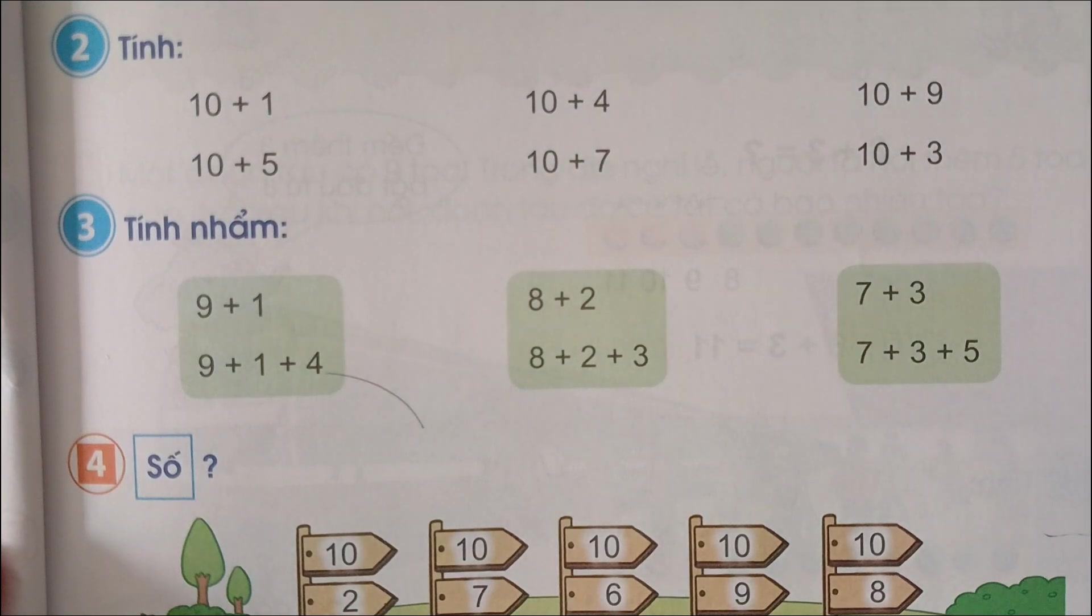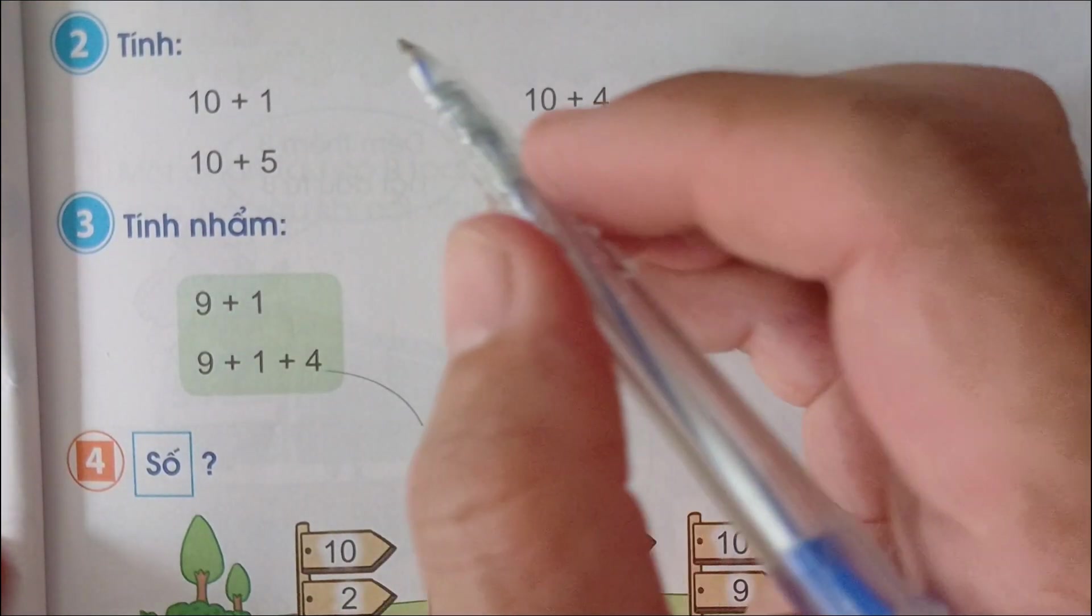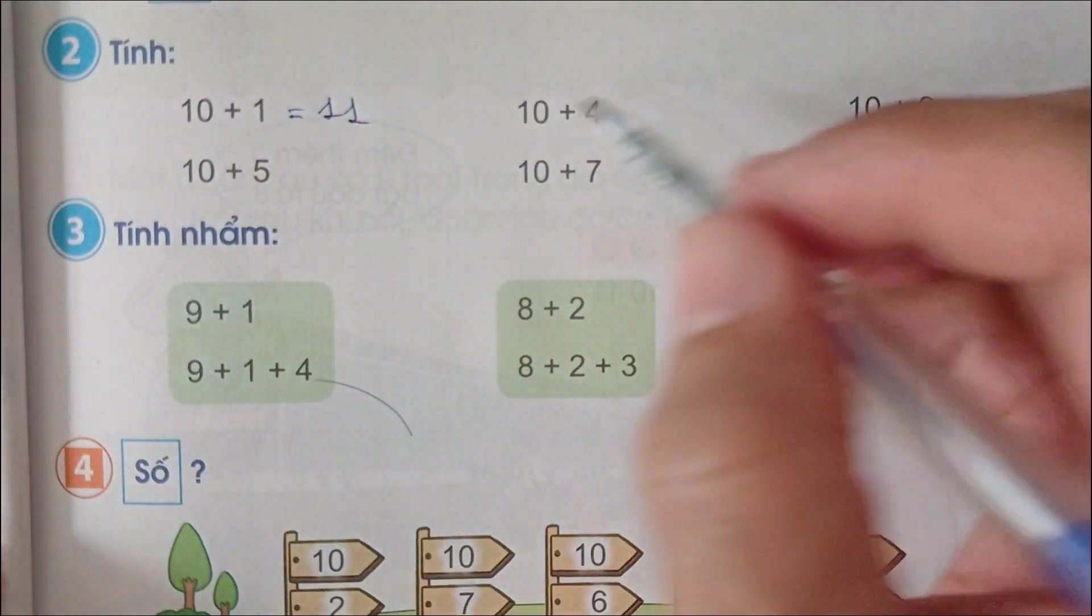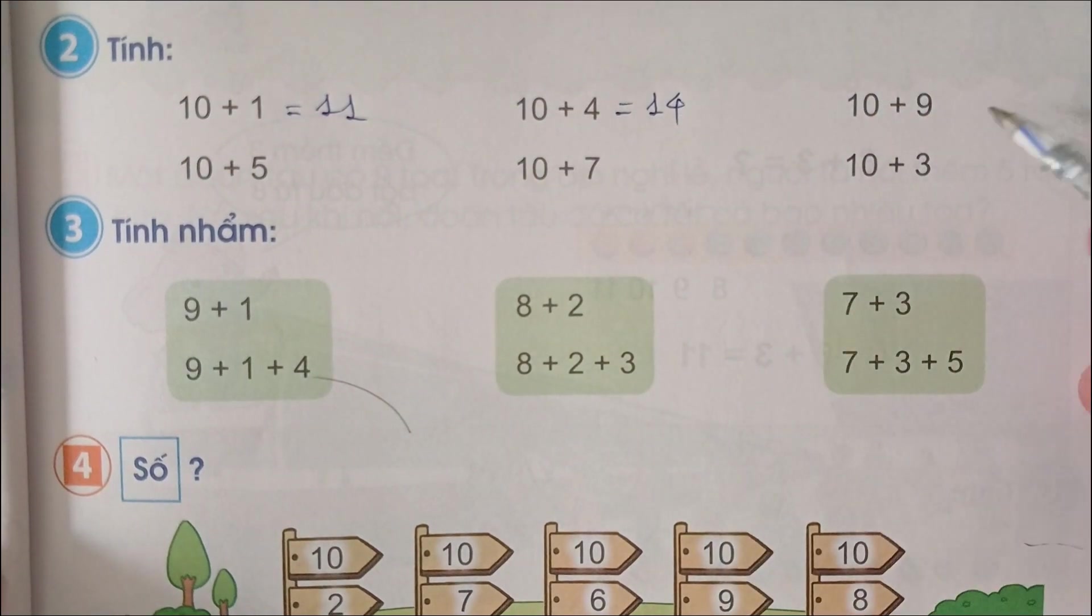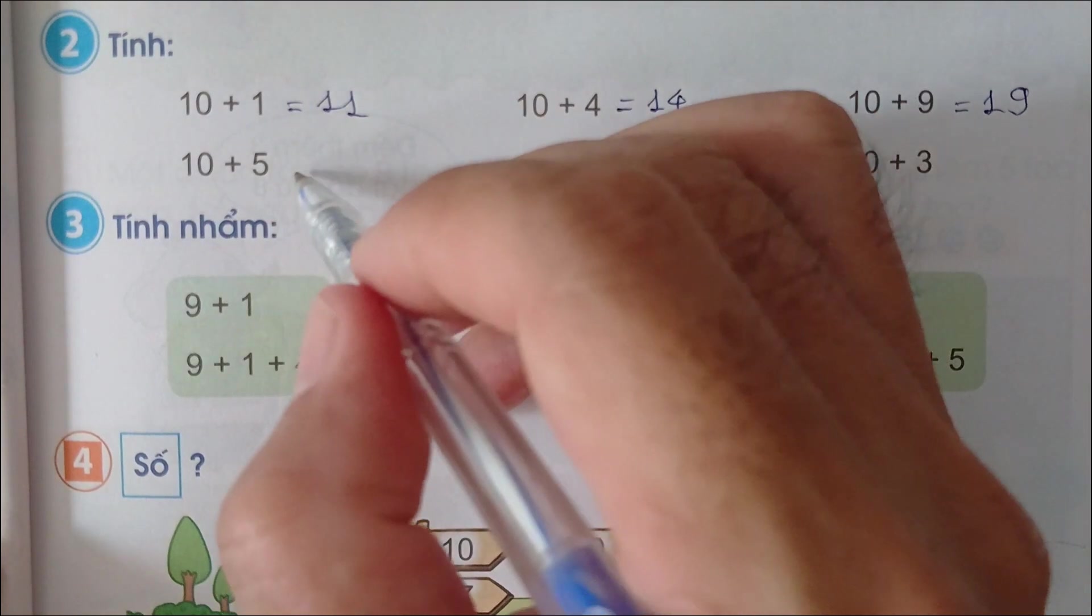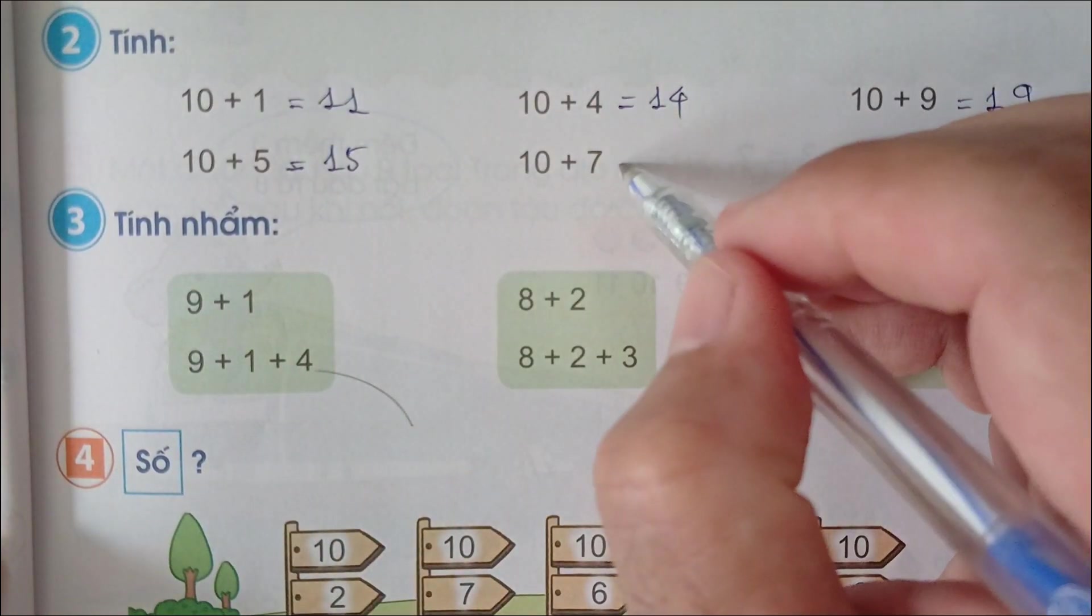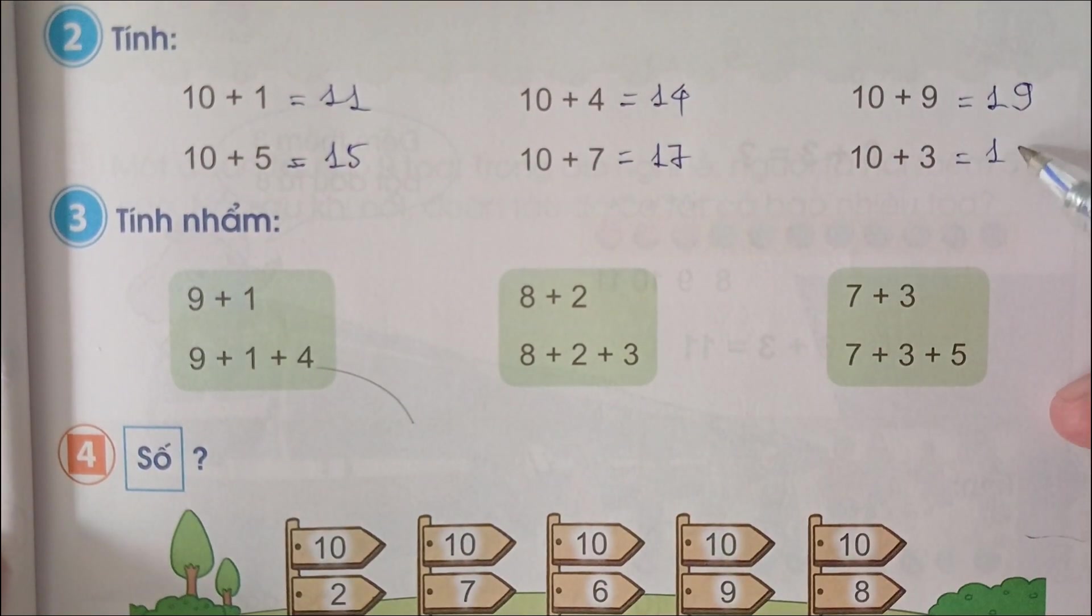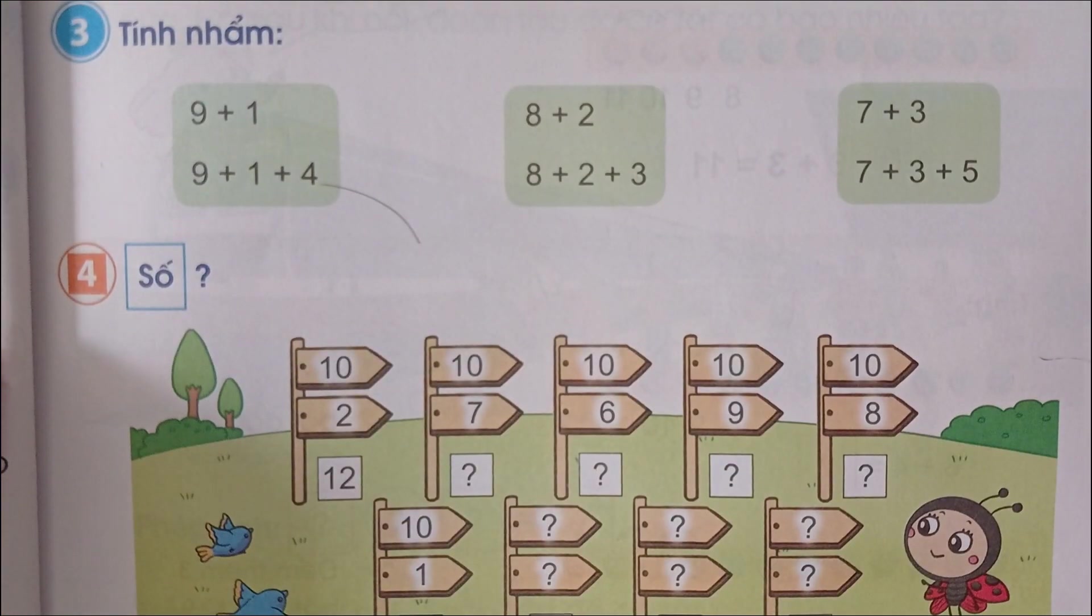Bài 2, tính: 10 cộng 1 bằng 11. 10 cộng 4 bằng 14. 10 cộng 9 bằng 19. 10 cộng 5 bằng 15. 10 cộng 7 bằng 17. 10 cộng 3 bằng 13.